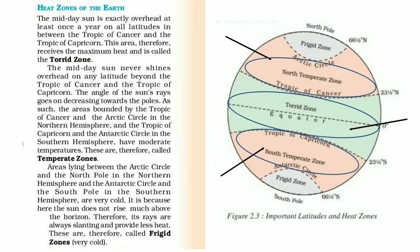And next, the Frigid Zone. The rays near the poles are scattered over a large area. Hence, areas near the poles are cooler than those near the equator. The areas lying between the Arctic Circle and the North Pole in the Northern Hemisphere, and the Antarctic Circle and the South Pole in the Southern Hemisphere, are very cold. These are therefore called Frigid Zones.